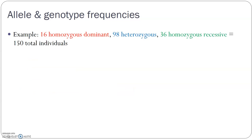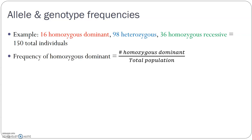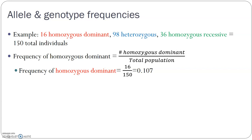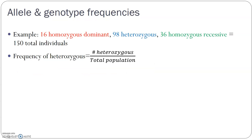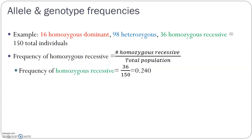Next, let's look at genotype frequencies, which I think is easier because we've already been given the numbers: 16, 98, and 36. For genotypes, we just divide by the total population of 150. The homozygous dominant frequency is 16 divided by 150, giving us 0.107 or 10.7%. The heterozygote frequency is 98 divided by 150, giving us 0.653 or 65.3%. The homozygous recessive frequency is 36 divided by 150, giving us 0.24 or 24%. Add these three together and they equal 1.